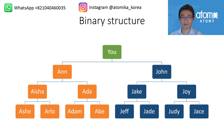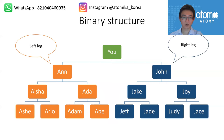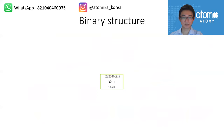This way your structure can go in depth indefinitely — there are no limits. You can register people all over the world and keep registering. Your left leg and right leg are formed this way. All partners on your left side are your left leg partners, and all partners on the right side are your right leg partners.